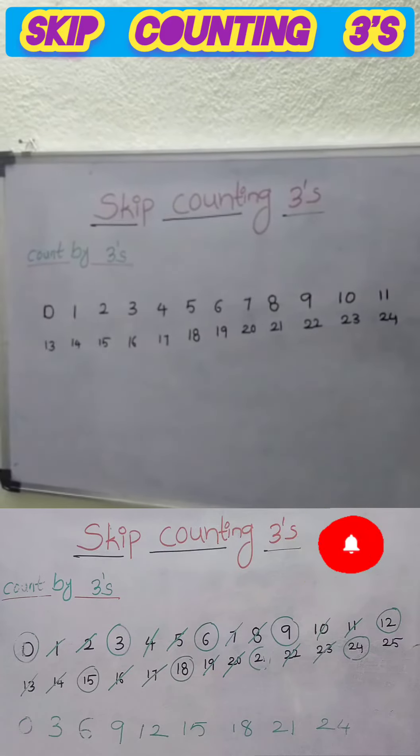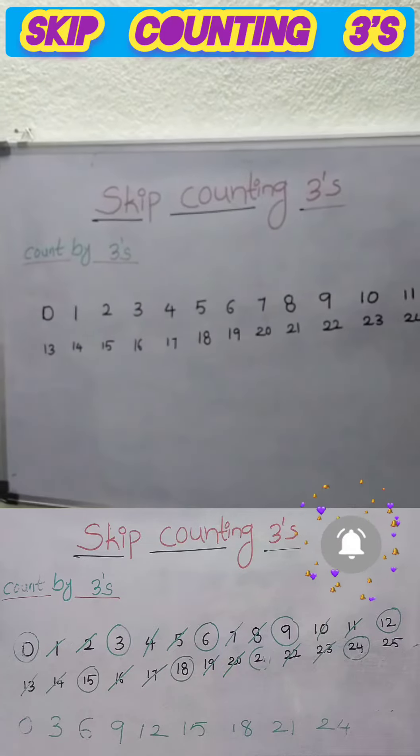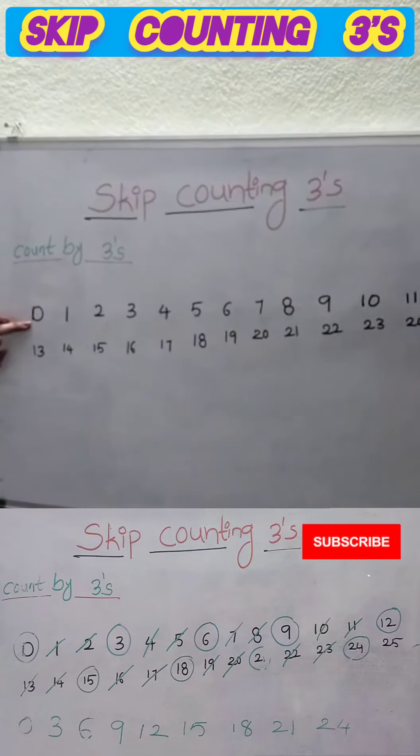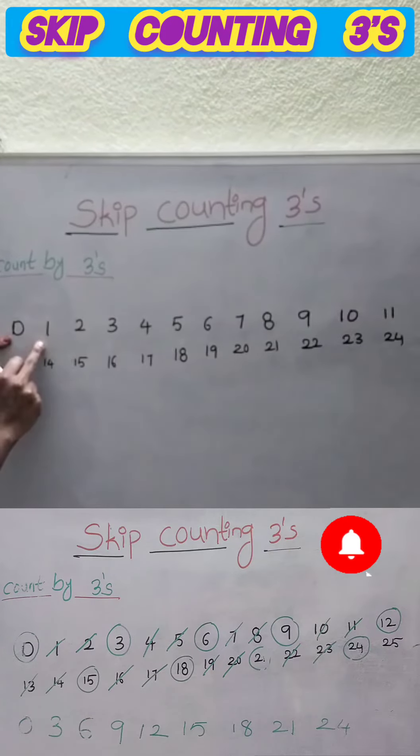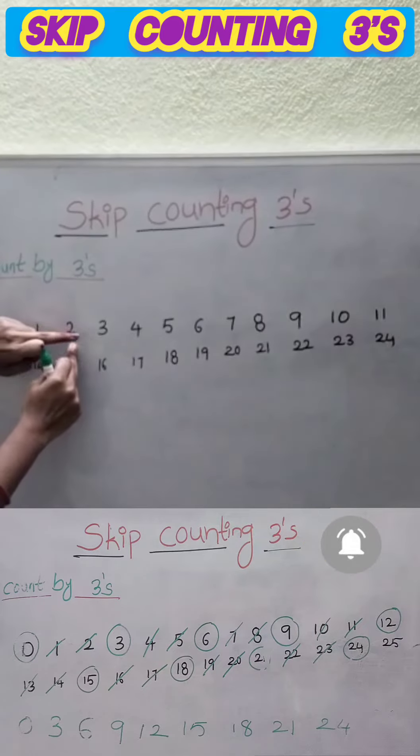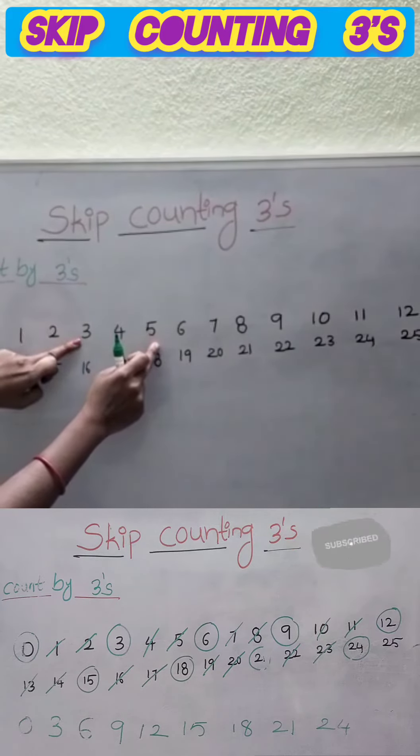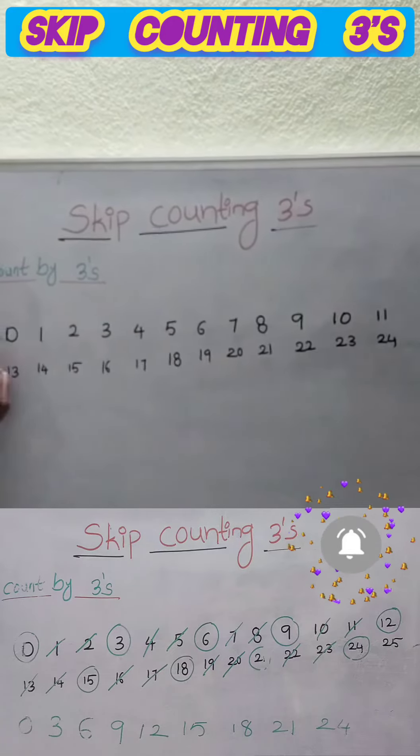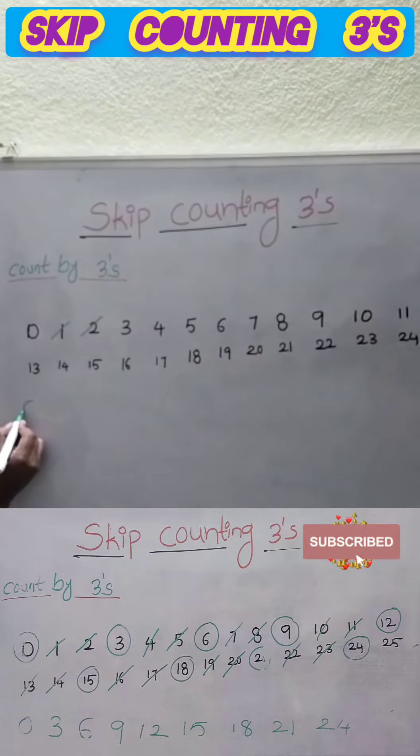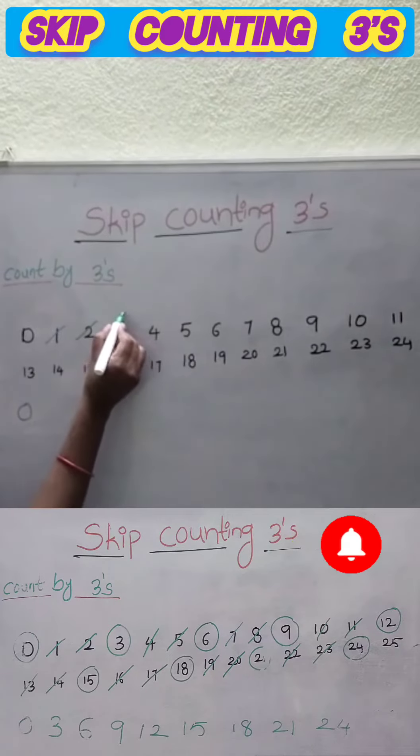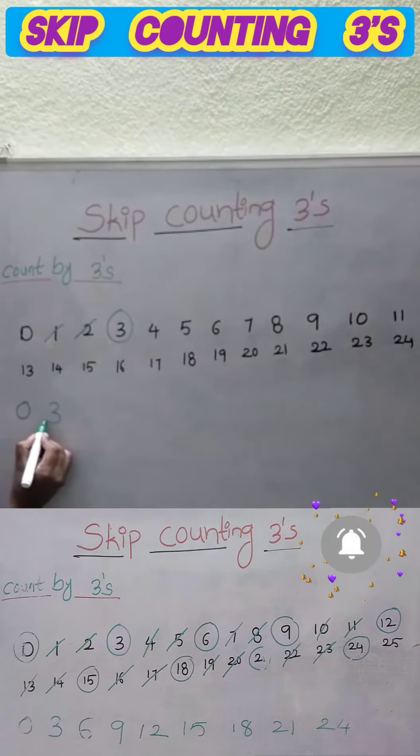Skip counting by threes, count by threes. Now we start with 0, skip two numbers 1, 2, we have to write 3. Then you have to skip 4 and 5. 0, skip 1, 2, we have to write 3.